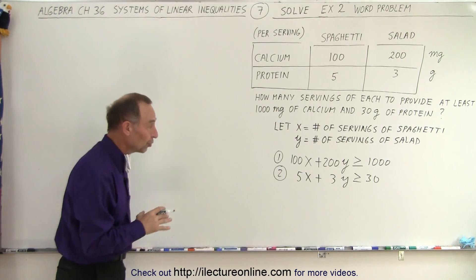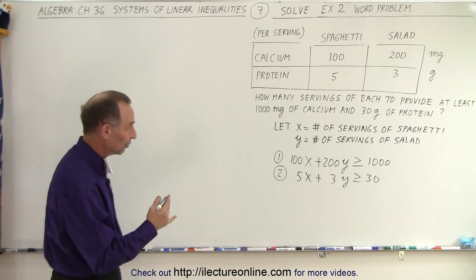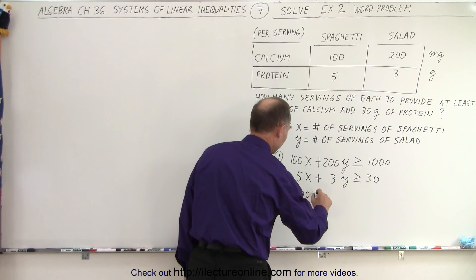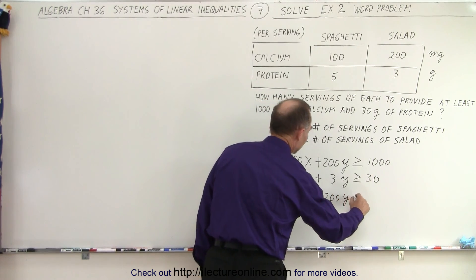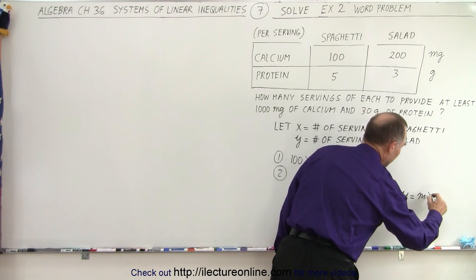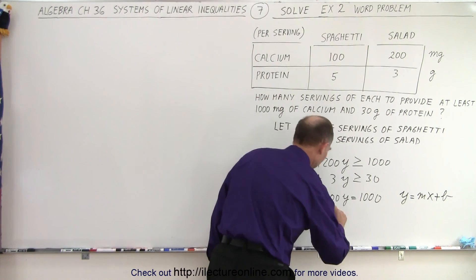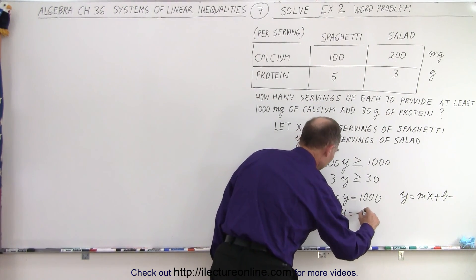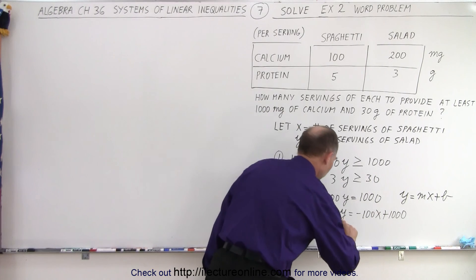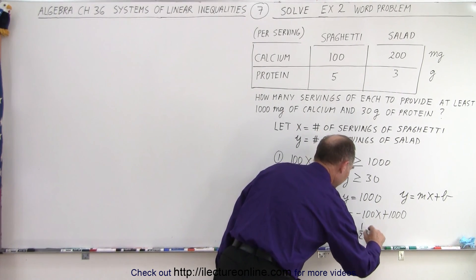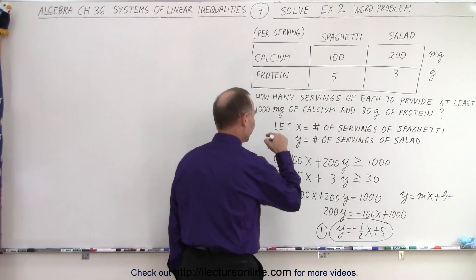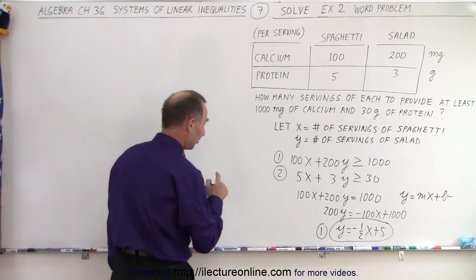Now we want to graph those inequalities. First, we find the boundary lines by solving the equivalent equations. For the first one: 100x plus 200y equals 1000. We put that into y = mx + b form by solving for y. We get 200y equals negative 100x plus 1000, and dividing everything by 200 gives y equals negative one-half x plus 5. That is the equation of the boundary for our first inequality.